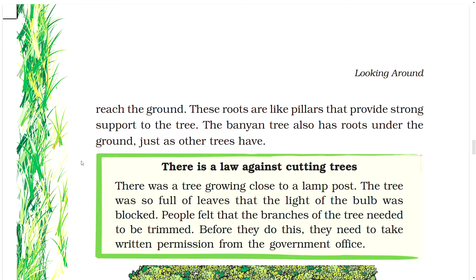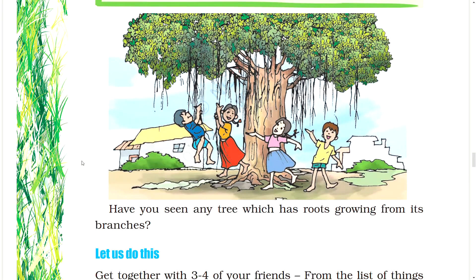There is a law against cutting trees. There was a tree growing close to a lamppost. The tree was so full of leaves that the light of the bulbs was blocked. People felt that the branches of the tree needed to be trimmed. Before they do this, they need to take written permission from the government office.